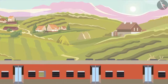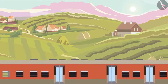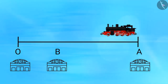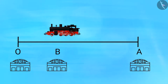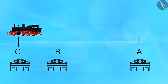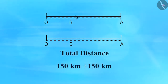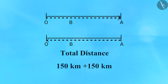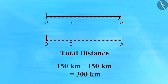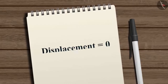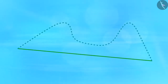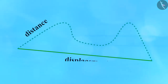On the same day the train returns to station O, starting from station A via station B. The total distance covered is 150 plus 150, equal to 300 kilometers. Since the initial and final positions are the same, the total displacement of the train is zero.